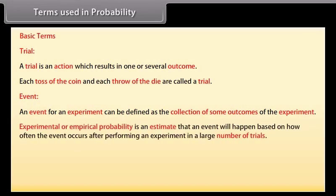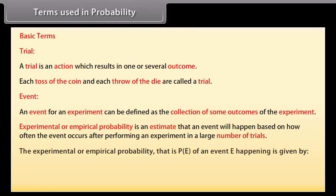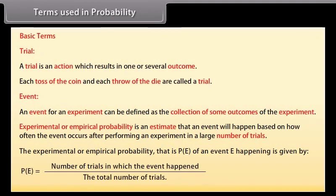Experimental or empirical probability is an estimate that an event will happen based on how often the event occurs after performing an experiment in a large number of trials. The experimental or empirical probability P(E) of an event E happening is given by P(E) equals number of trials in which the event happened upon the total number of trials.